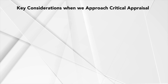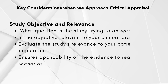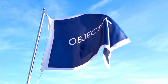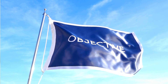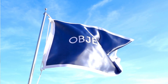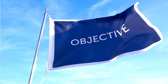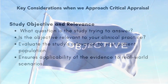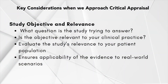Let's highlight some key considerations in critical appraisal when evaluating different types of clinical trials. The first is study objective and relevance. Understanding the objective of the study is the first step in any critical appraisal. We have to ask ourselves: what question is this trial trying to answer? Is it testing a new drug, comparing two interventions, or studying long-term outcomes? Once the objective is clear, it's important to assess whether the trial is relevant to your patient population or clinical setting. A highly specialized study may offer little insight if its population doesn't resemble the patients you typically see.